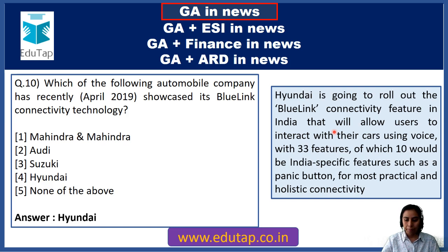Question 19: Who among the following has been recently awarded the John Dirks Canada Gairdner Global Health Award in April 2019? The answer is Vikram Patel. Keep in mind important personalities and the awards or prizes in news.